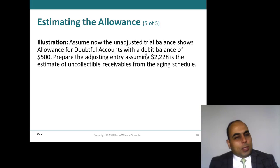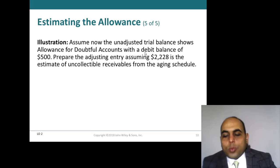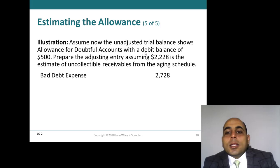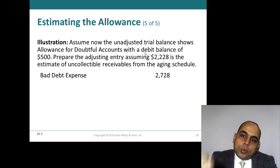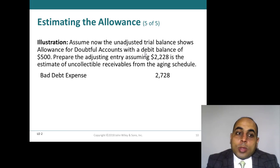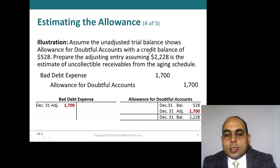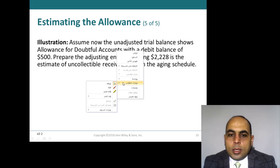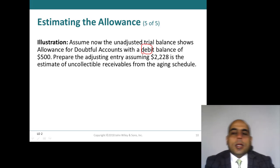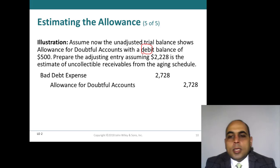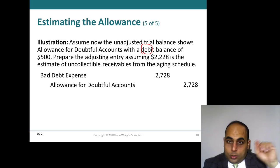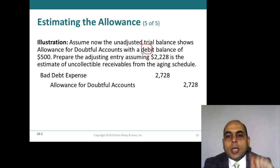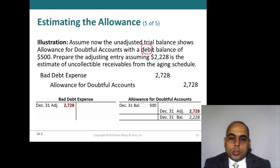First, you have to cancel the existing debit balance, and then record the full estimate of $2,228. So the total bad debt expense will be $2,728 — $500 to cancel the debit balance, plus $2,228 to reach the required balance. The entry is: debit bad debt expense $2,728, credit allowance for doubtful accounts $2,728. The key difference from the previous example is that here the existing balance is a debit, not a credit.